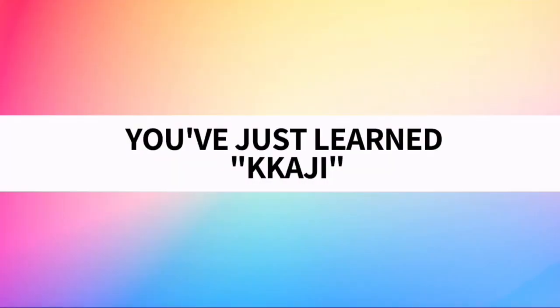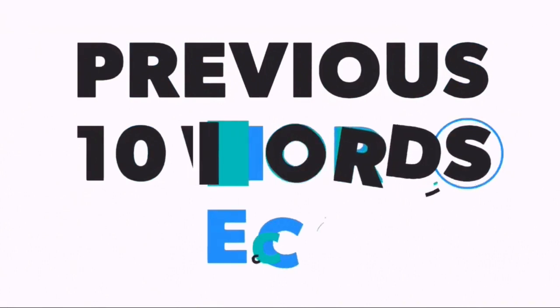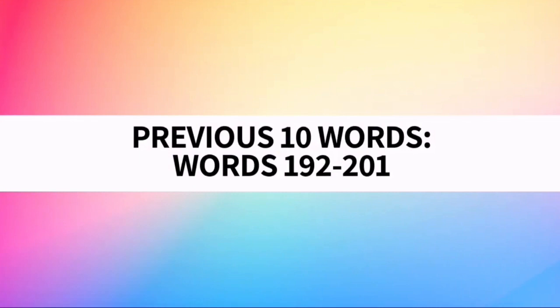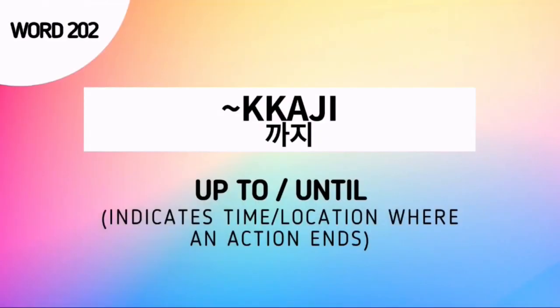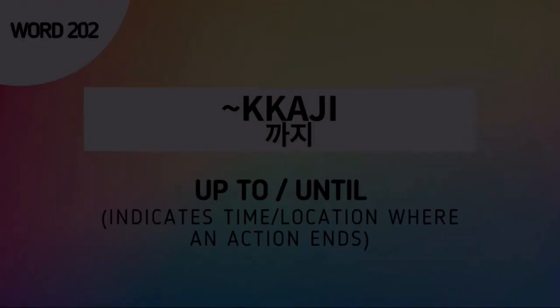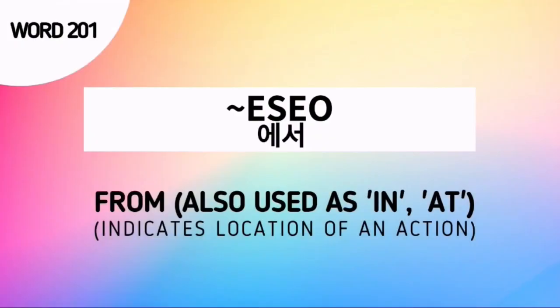And with that, you've just learned Kaji. Now let's proceed to the previous ten words recap. As of now, the previous ten words are words number 192 to 201. Don't forget our word for today — the suffix Kaji — used to say 'up to' or 'until.' Word number 201 is Eso, used to say 'from,' 'in,' or 'at.'